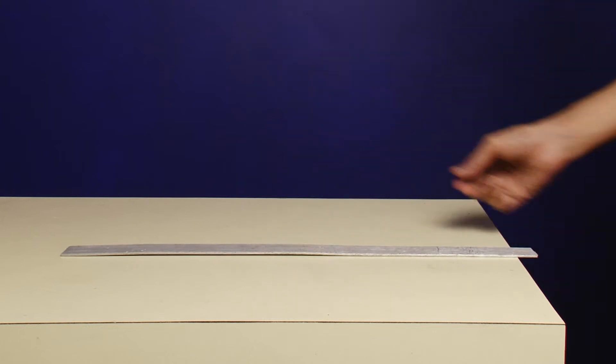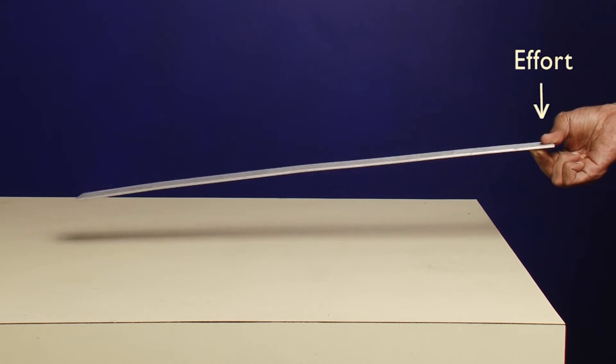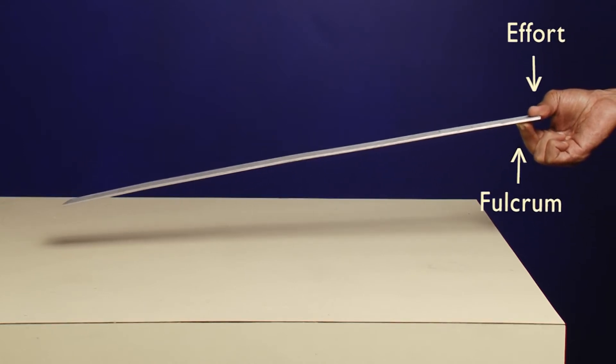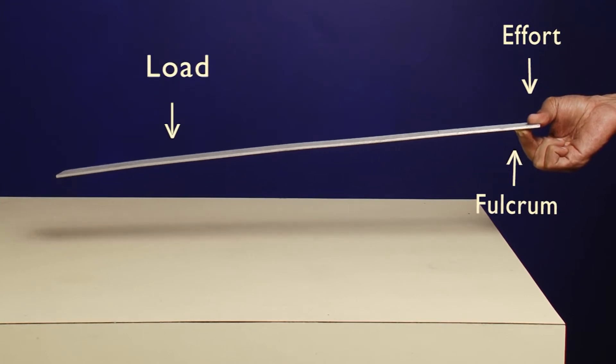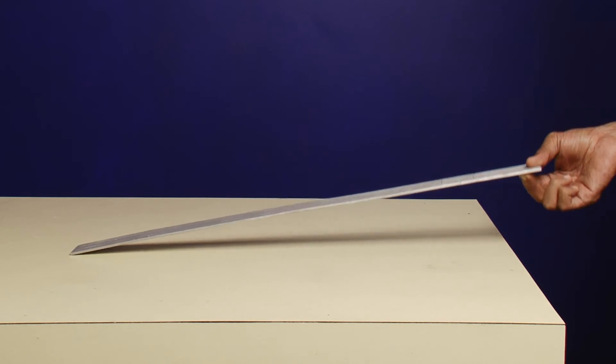What do you observe? When we try to pick the scale from the corner, the thumb applies the effort and the fingers below act as the fulcrum. The entire length of the scale ahead of the fulcrum works as the load. This needs a lot of effort by the thumb to be balanced, making it difficult to hold it.